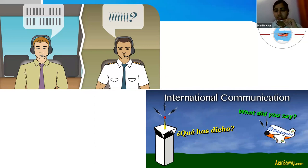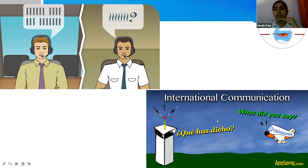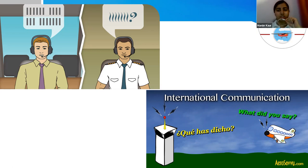Here you can see the voice coming from the air traffic controller tower and the aircraft is trying to communicate for landing. If the pilot is speaking in English and the ATC is speaking in another language, how would they coordinate for the landing? There has to be a single communication language to operate everything perfectly.